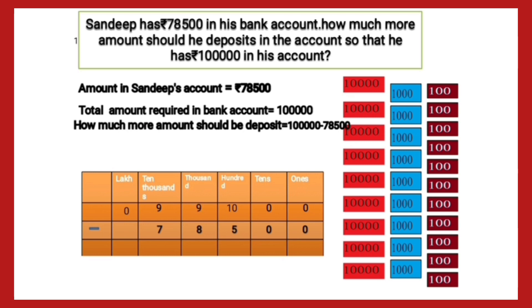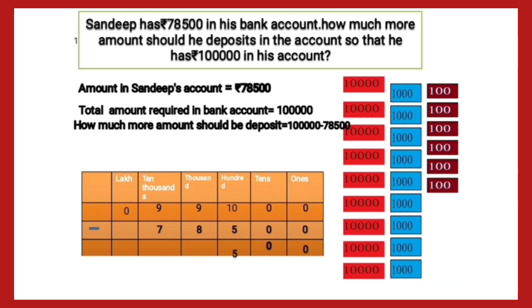We start subtraction from ones. At ones place there will be 0, and at tens place there is 0. Now if we subtract 5 cards from 10 at hundreds, we will have 5 remaining.